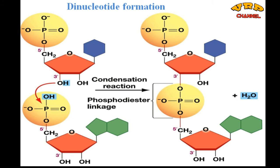Now, how do two such nucleotides join together to form a dinucleotide? Two nucleotides are joined together by a condensation dehydration reaction with the loss of a water molecule to form a dinucleotide, and a phosphodiester linkage is established between the two nucleotides. During the formation of the phosphodiester linkage, the hydroxyl group present at the 3' position of the first nucleotide combines with the hydroxyl group of H₃PO₄ of the second nucleotide, releasing a water molecule. This is the third condensation dehydration reaction.